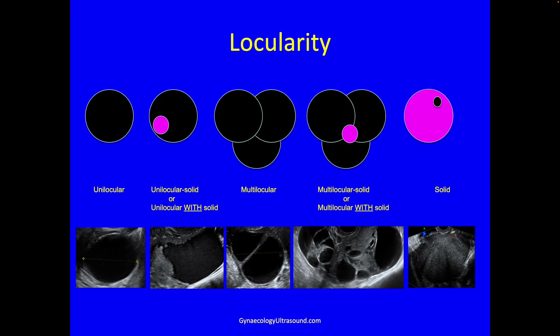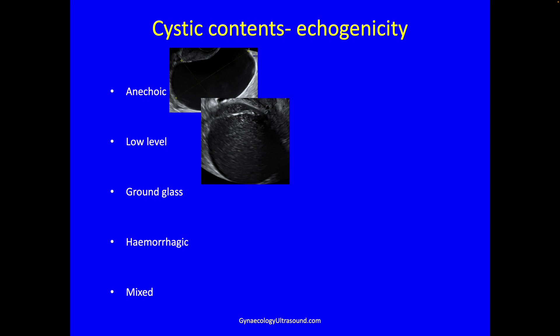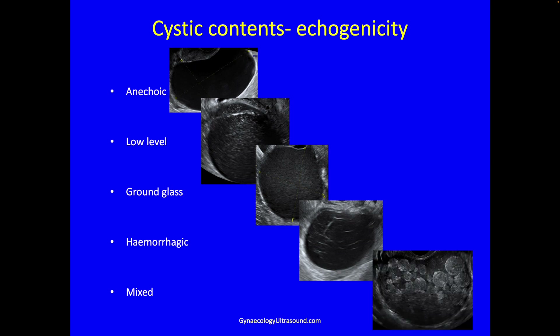A solid mass is allowed a cystic component, but this should be less than 20% of the overall mass to still be classified as solid. Then we look at the cyst contents: whether there are no echoes, low level echoes, ground glass echogenicity which is just denser, hemorrhagic, or mixed.